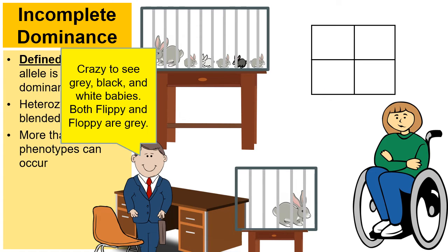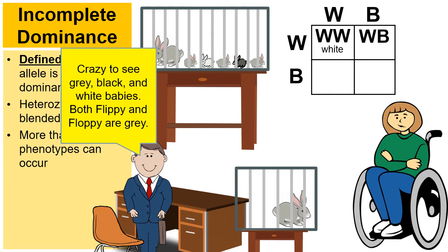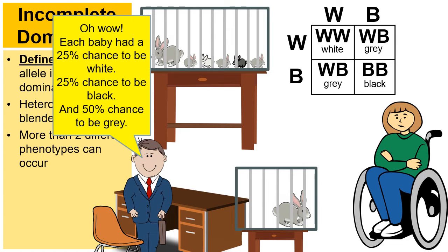There's the genotype of Flippy — gray with a combination of white and black — and there's the genotype of Floppy, also gray with white and black. When we fill in the Punnett squares: top left produces a white-furred rabbit; top right produces a gray-furred rabbit; bottom left also produces a gray-furred rabbit; and the bottom right produces a black-furred rabbit. So each baby had a 25% chance to be white, 25% chance to be black, and a 50% chance to be gray.